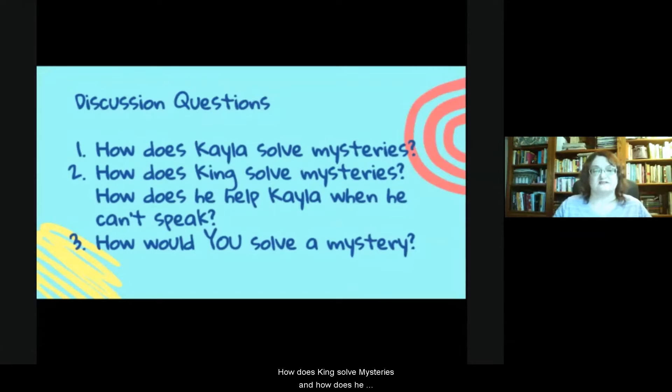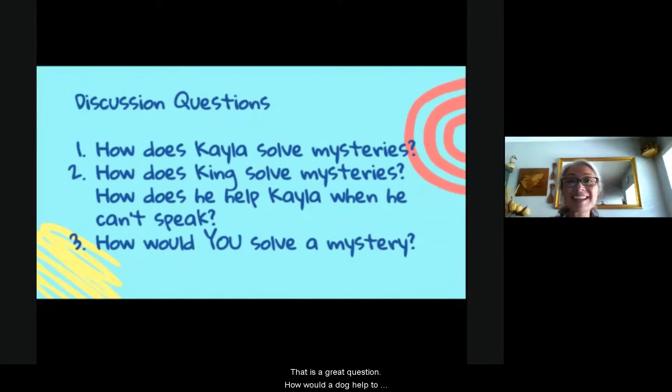How does King solve mysteries? And how does he help Kayla when he can't speak? That is a great question. How would a dog help to solve a mystery when he can't speak English? Well, he uses his senses. So he uses his ears, his nose, his mouth, sense of touch. He uses those things to help solve the mystery.